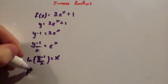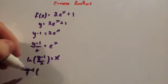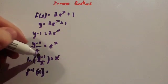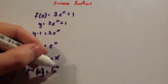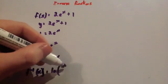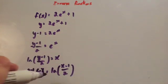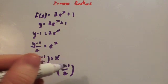Last step: write the inverse function, so f to the minus 1 of x equals, and then you write this expression - ln bracket x minus 1 over 2. So the inverse function is the natural log of x minus 1 over 2.